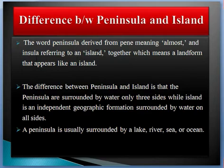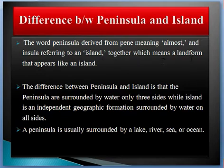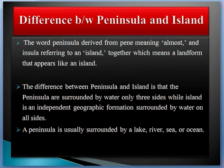The word peninsula is derived from 'pin' meaning almost and 'insula' referring to an island — together meaning a land form that appears like an island. The difference between a peninsula and an island is that a peninsula is surrounded by water on only three sides, while an island is an independent geographic formation surrounded by water on all sides.